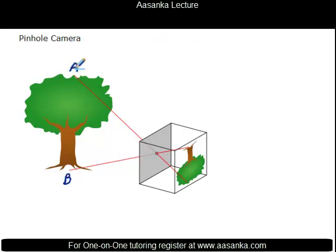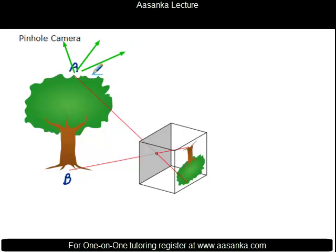We mark point A at the top and point B at the bottom. When light is incident on A, or any other point on the tree, it gets reflected in all directions — so from A, light is going in all directions. But only the light which actually passes through the small hole will be useful in identifying the image; light going in other directions goes elsewhere. This light travels through the hole and then reaches the screen.